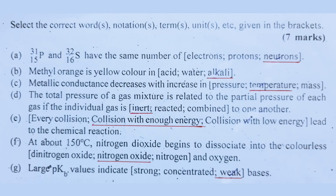Number 3, Number 8: 15P31 and 16P32 have the same number of neutrons. Number B: Orange is yellow color in acid conditions — referring to indicators.